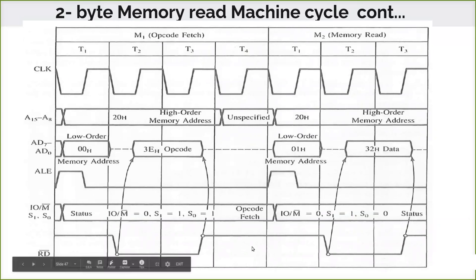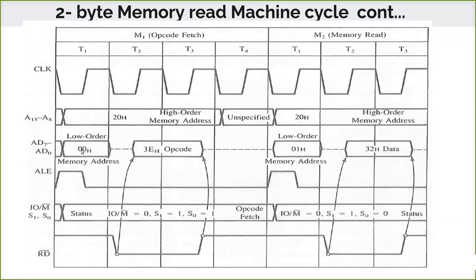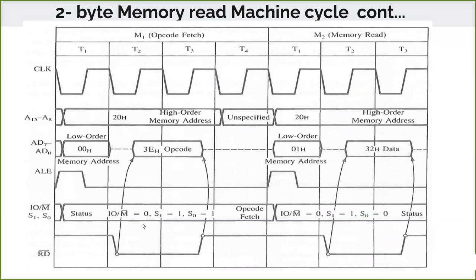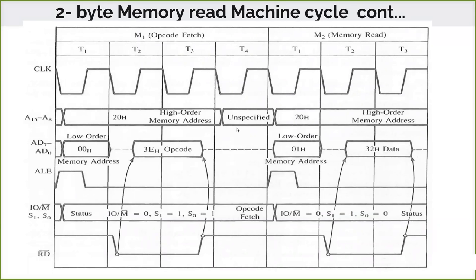In the first machine cycle, 3E is fetched. The lower order address is placed, ALE latches, the address is stabilized, and when it reads, RD-bar goes low. IO/M-bar goes low, and by that time the status signal goes high indicating it is an opcode fetch. Then at T4, RD-bar goes high indicating reading is complete. Now the instruction is decoded, and the microprocessor finds that it is not a single byte — one more reading has to be done to complete the instruction, because only MVI A has been read so far.